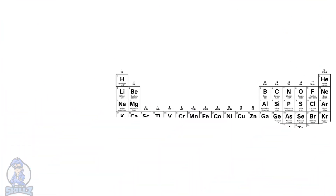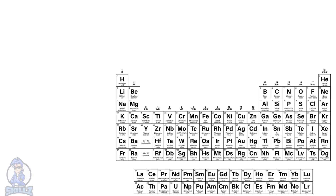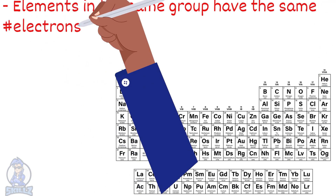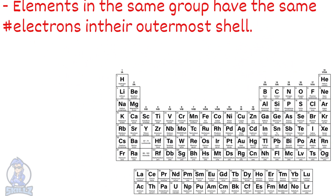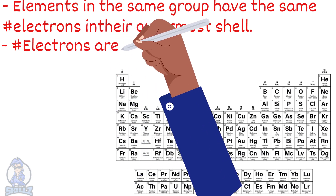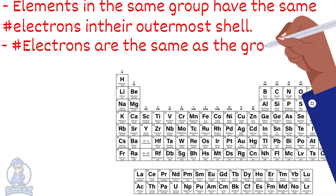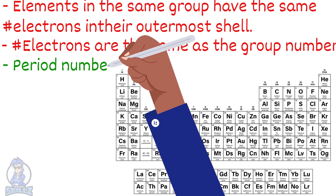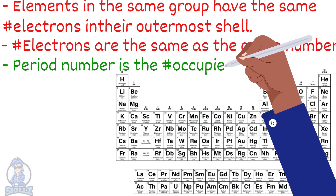You can work out the electronic configuration of an atom easily using the periodic table. For this, you need to know two important facts: elements in the same group in the periodic table have the same number of electrons in the outermost shell, and the number of electrons in the outermost shell is the same as the group number. The period number gives us the number of occupied shells for that element.